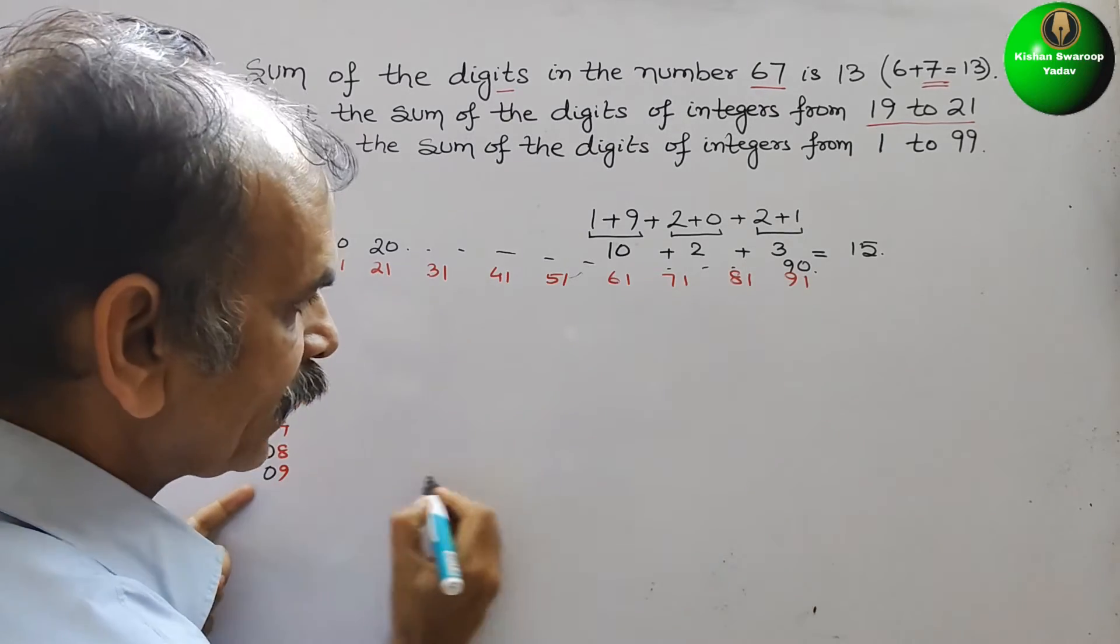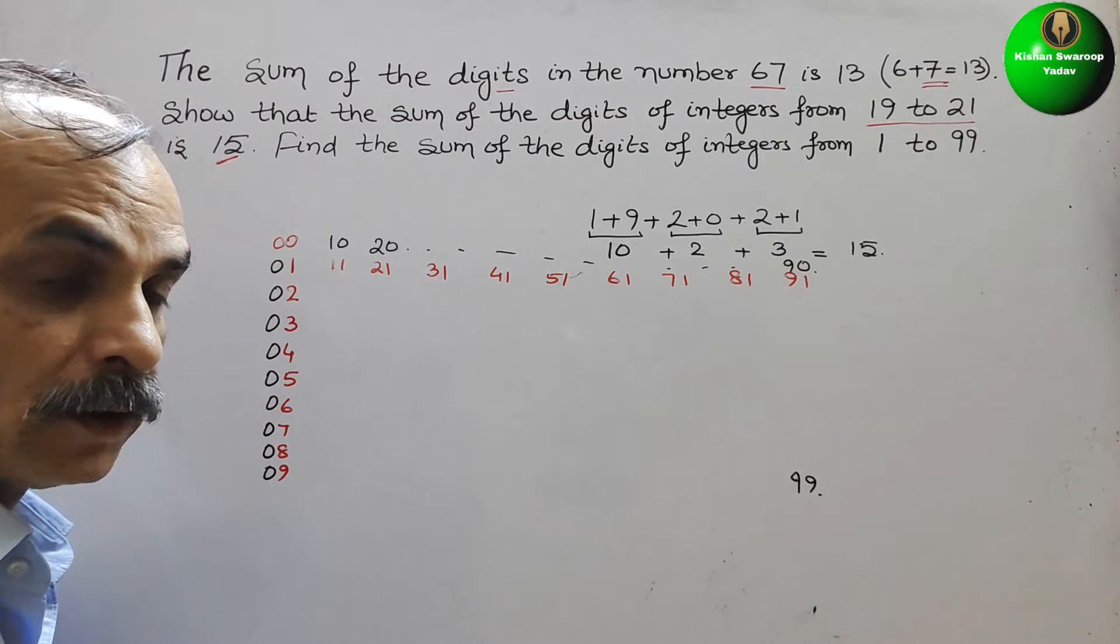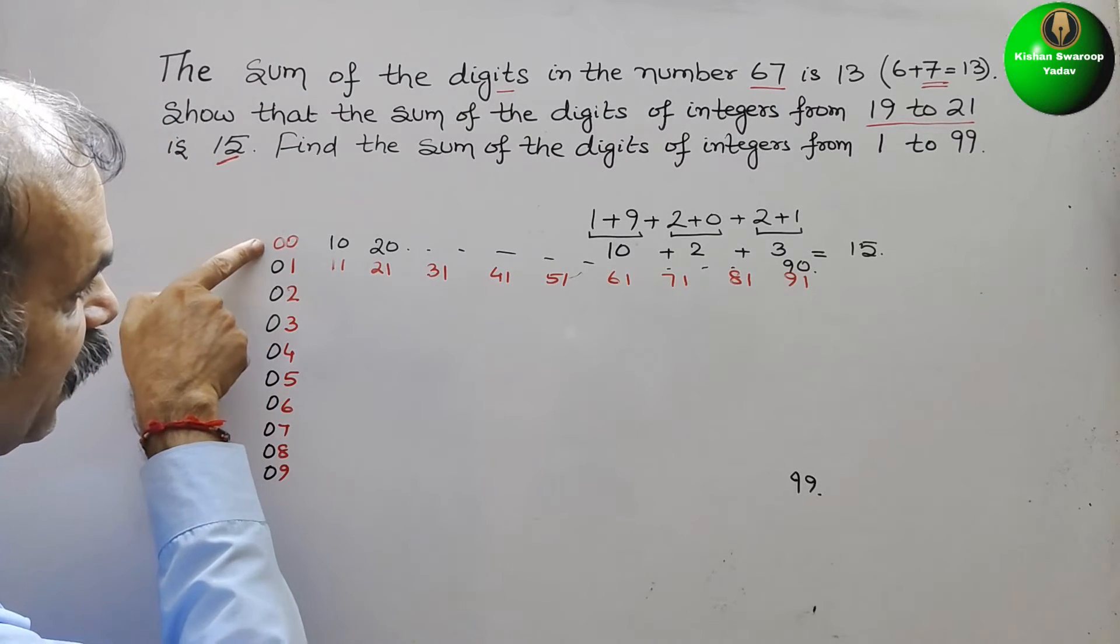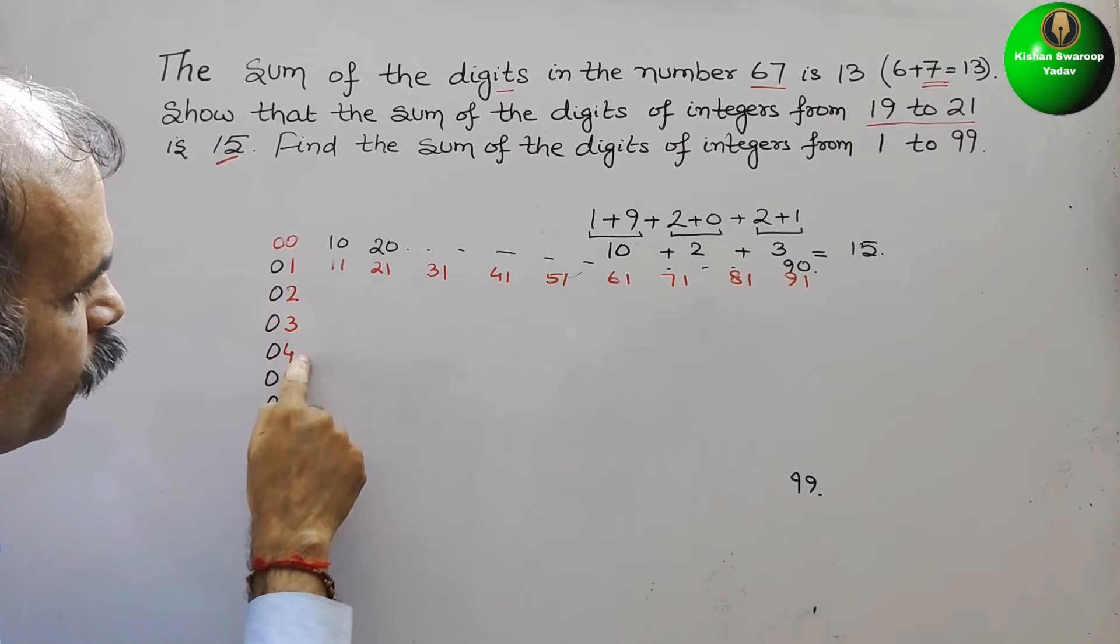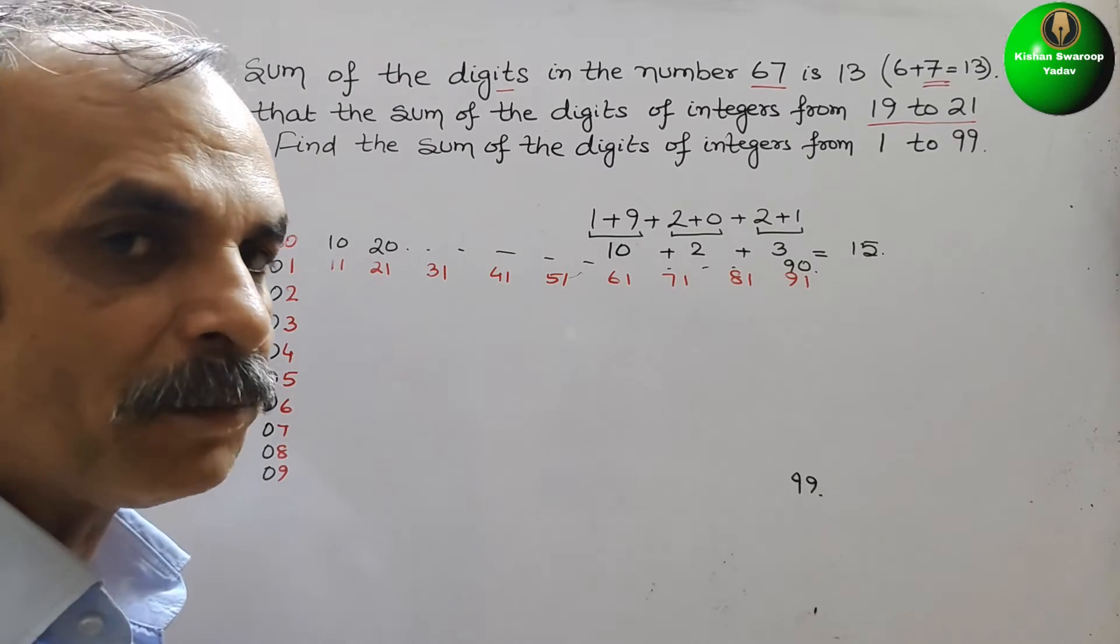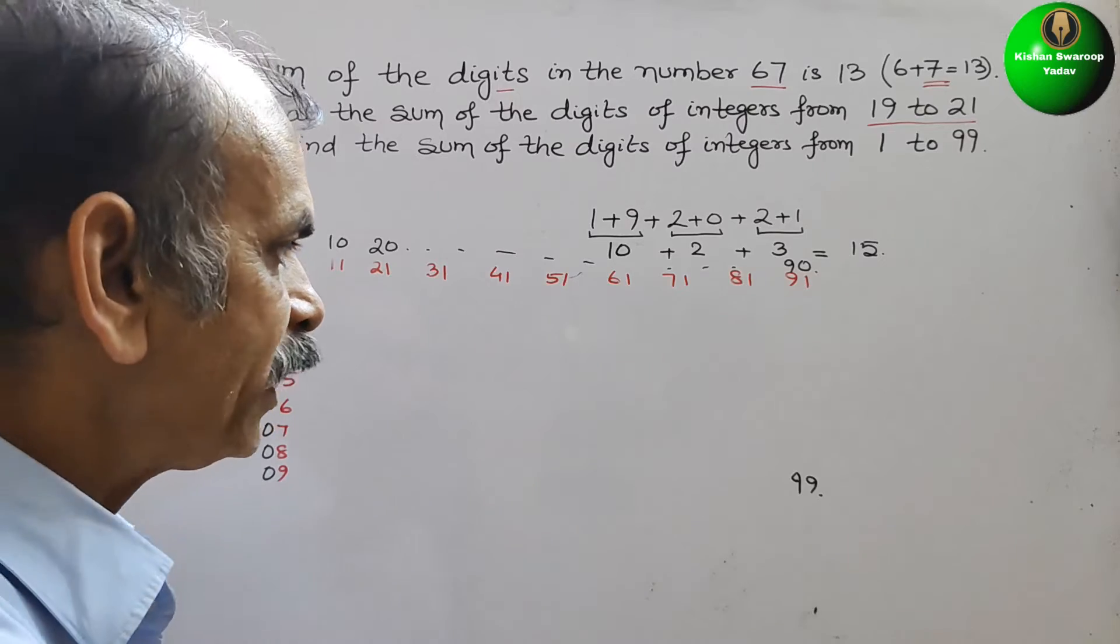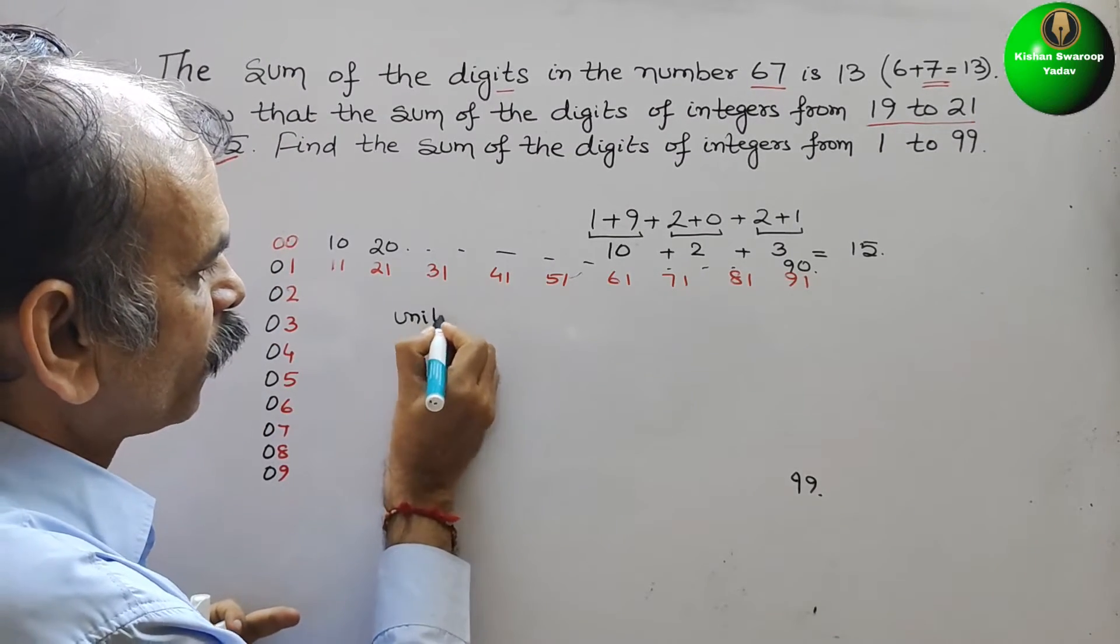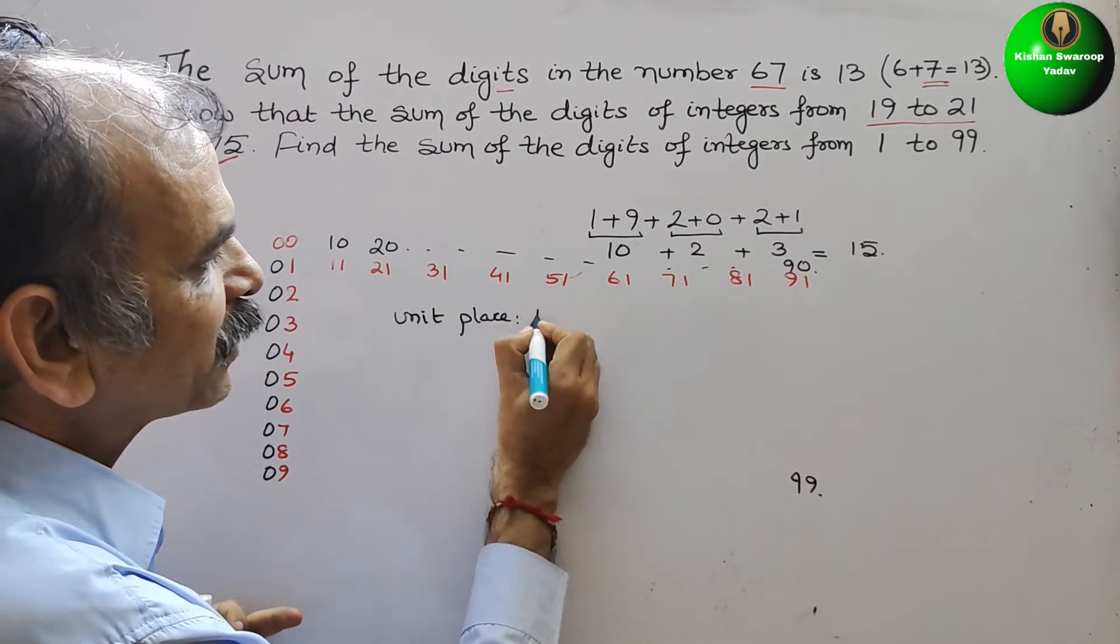Like that it will be 90, and at the right it will be 99. Now we have to check it. What is that? You can see, here 0's are there. Here 0, 1, 2, 3, 4, 5, 6, 7, 8, 9 is there. That means total numbers is 10. So we can say in unit place, numbers are 10.